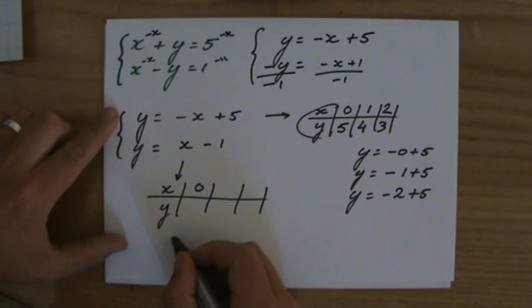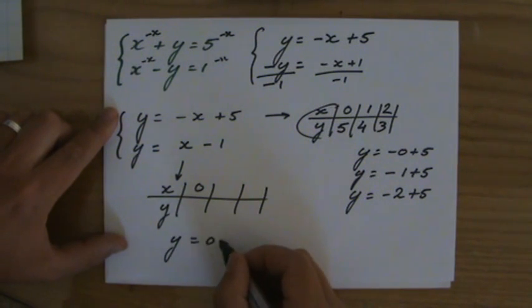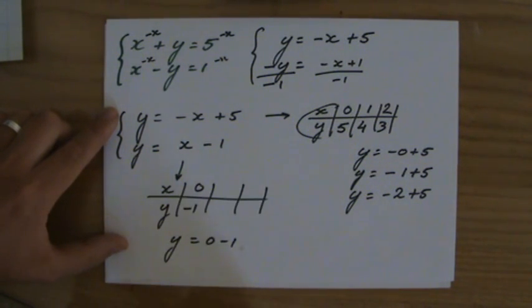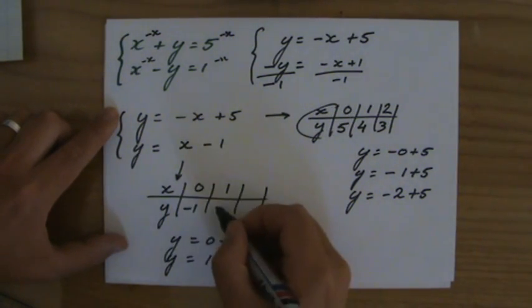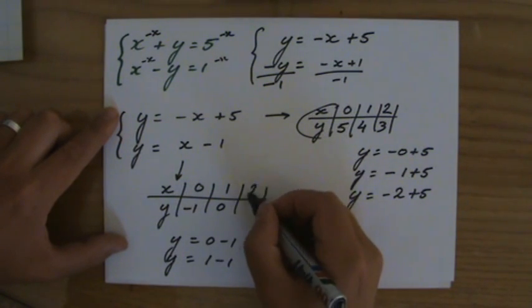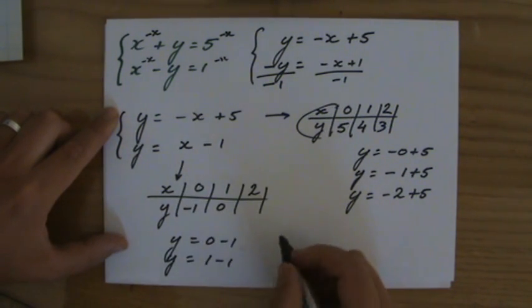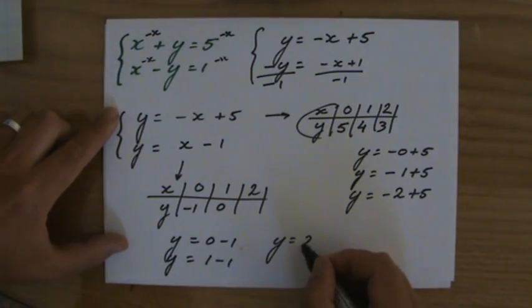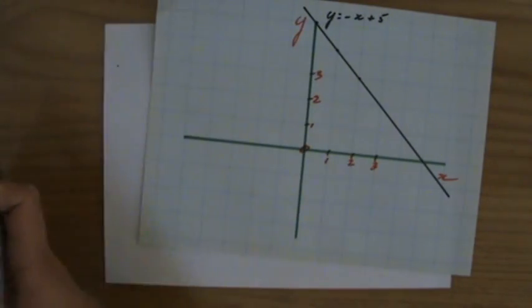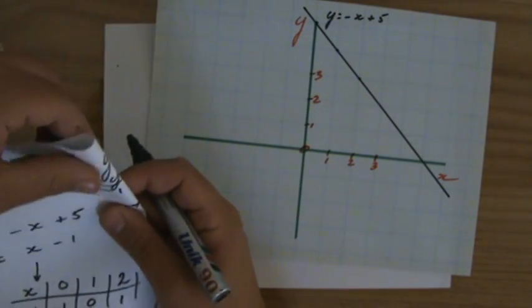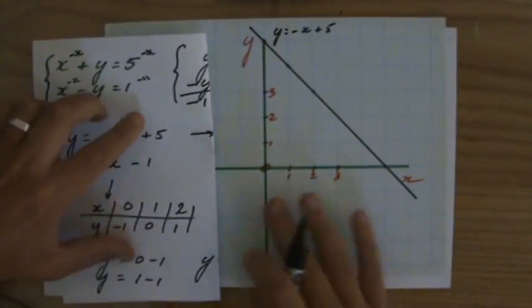Zero. What is y when x is 0? 0 minus 1, that's -1. What is y when x is 1? 1 minus 1, that is 0. Let's do 2. What is y when x is 2? Well then y is 2 minus 1, that is 1. Got three points. Let's see if they are all three of them on the same line.